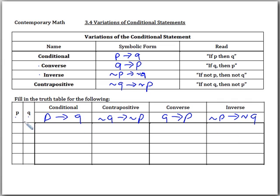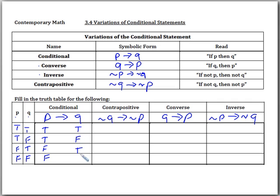Since we're only dealing with two statements, P and Q, our general cases are going to look like this. Let's go ahead and work on these truth tables. We can fill in the P and the Q, and then our final answers.